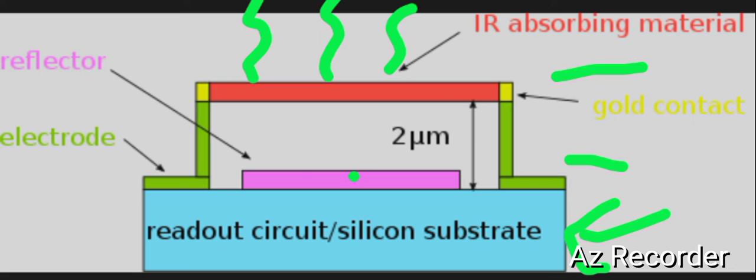There are two-dimensional arrays of many such elements in a typical sensor that makes a complete micro sensor. After absorbing the IR rays, this material heats up, and the radiations are also reflected back to this material.